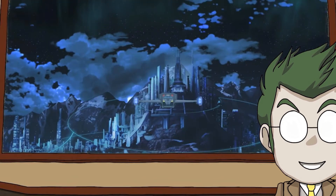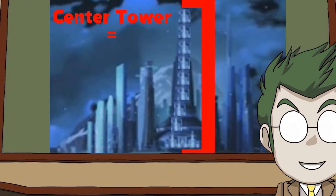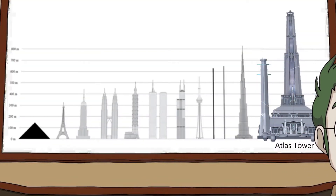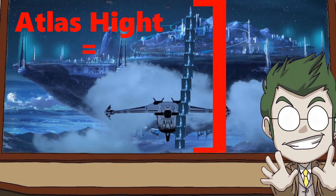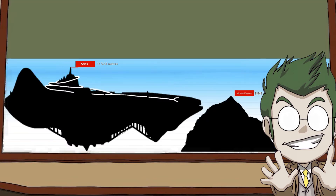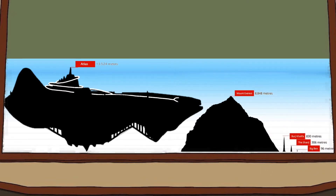Now we're getting somewhere. Using the door tower we can work out that the center tower of Atlas Academy is roughly 1,154.5506 meters tall. That's 1.39 times taller than the Burj Khalifa, the tallest building on planet Earth in 2020. But I'm not done yet. Using the center tower we can calculate that Atlas is roughly 13,524.6366 meters tall — that's 1.52 times taller than Mount Everest, the tallest mountain on planet Earth.